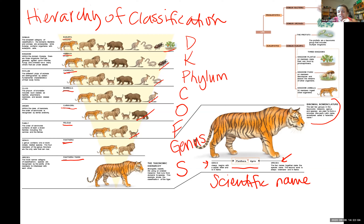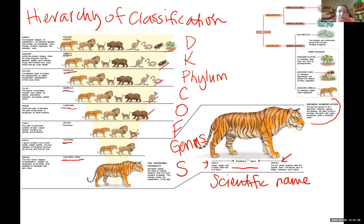Sometimes if it's a name we use a lot — like E. coli — we abbreviate the genus because everybody knows what you're talking about. The full name is something like Escherichia, which is long, so everyone just says E. coli. Sometimes you'll see the genus abbreviated. Everything else is lowercase; the first letter of the genus is capital. If typed, it's always in italics so people know this is a scientific name as opposed to just a common name.